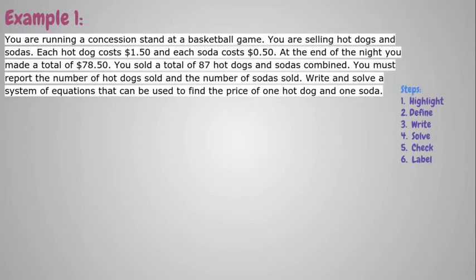So let's look at the first example. I have the steps written on the side and we're going to check them off as we go. It says you are running a concession stand at a basketball game. You are selling hot dogs and sodas. Each hot dog costs $1.50, so I'm going to highlight that. And each soda costs 50 cents. I'm going to highlight that. At the end of the night, you made a total of $78.50. I'm going to highlight that. You sold a total of 87 hot dogs and sodas combined.